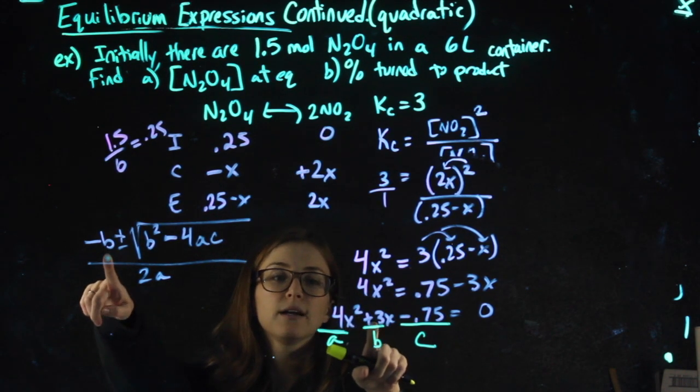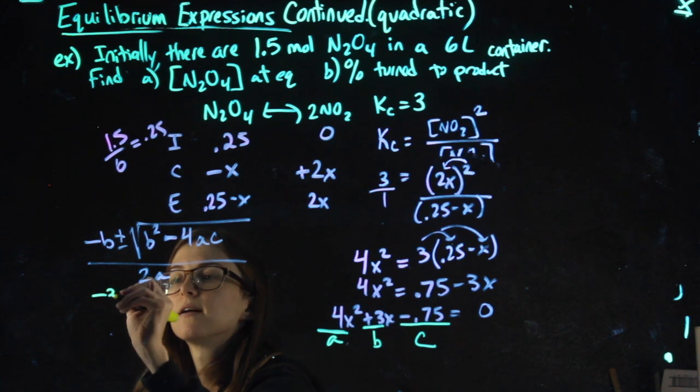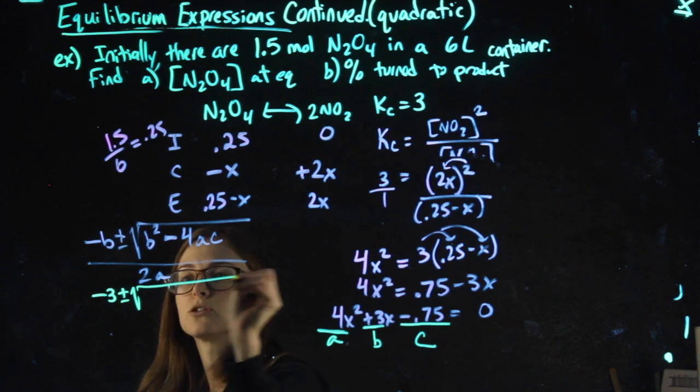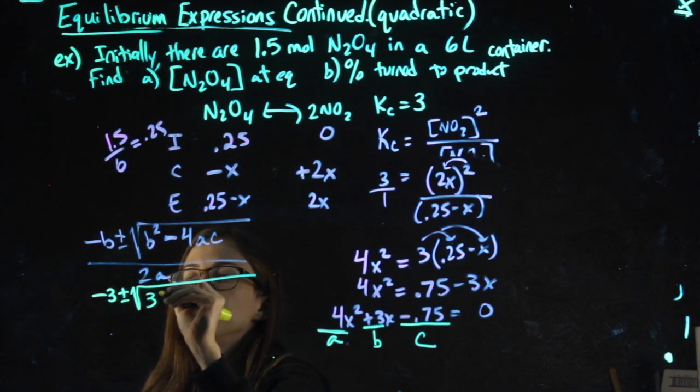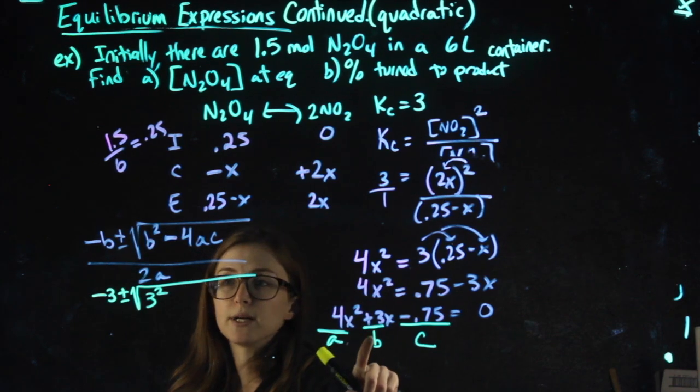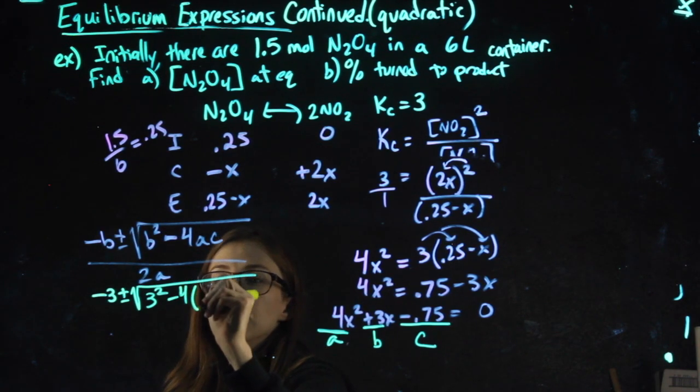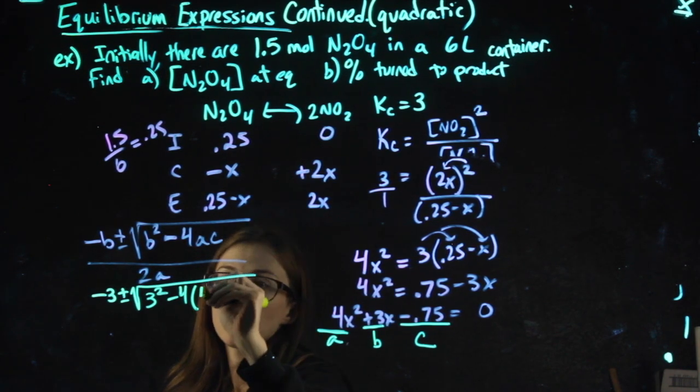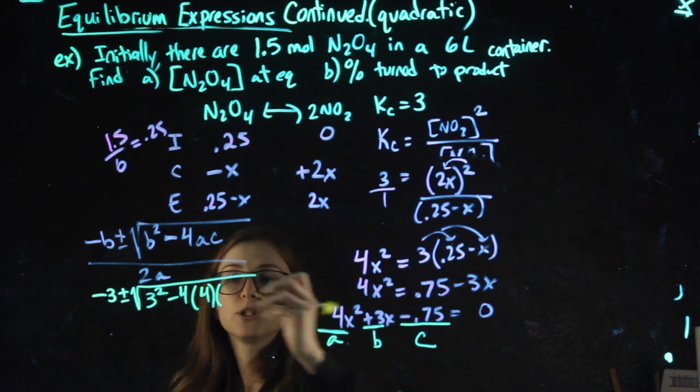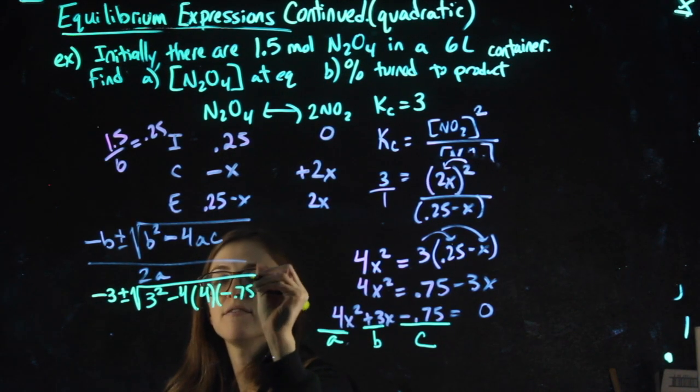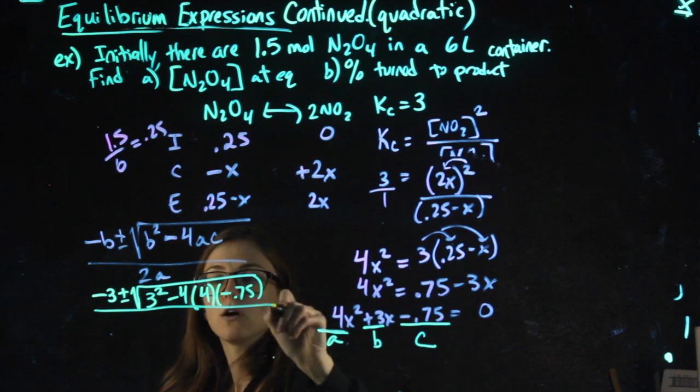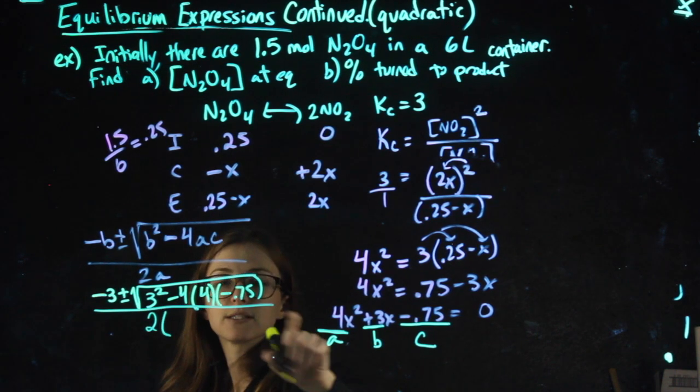So negative b is negative 3 plus or minus the square root of b squared - again, my b is 3 - minus 4 times a, which is 4, times c, which is negative 0.75, all over 2 times a.